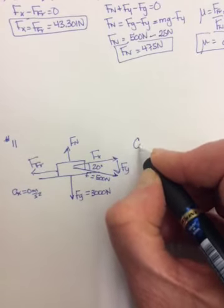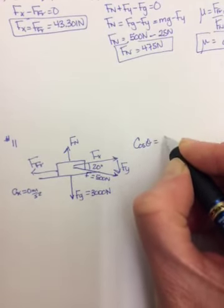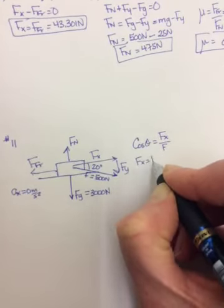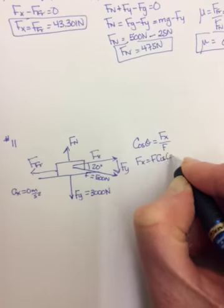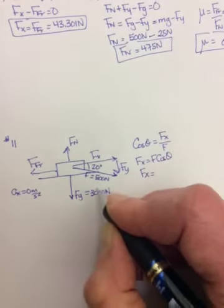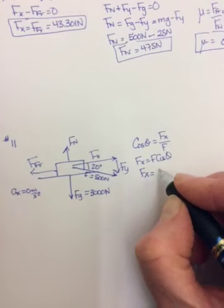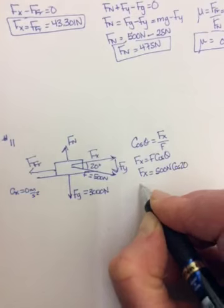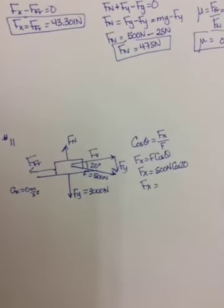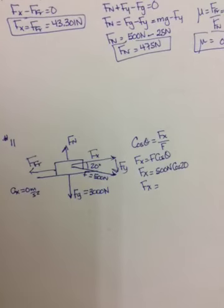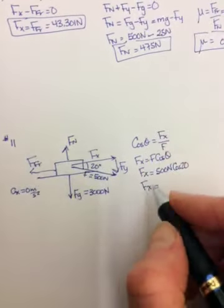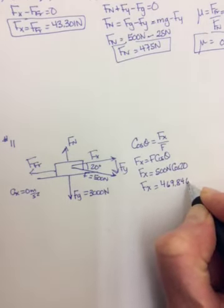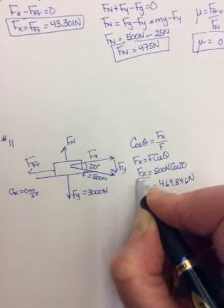Our Fx, again, is the adjacent side, so it's going to be cosine, and it is equal to Fx over F, so Fx will be equal to F cos theta, so Fx will be equal to 500 newtons times the cos of 20. It pains me to tell you this, but I don't know the cos of 20 off the top of my head. But when you do it, you should get 469.846 newtons for Fx.